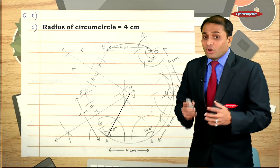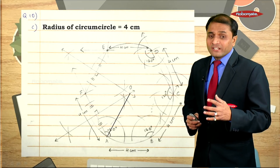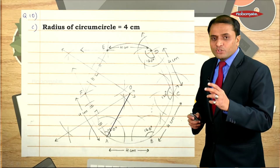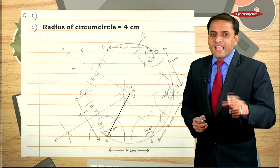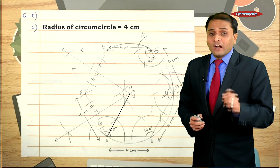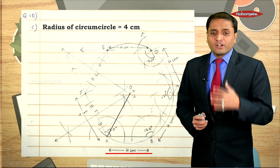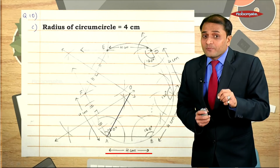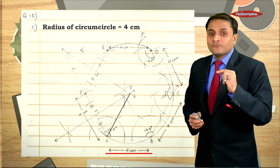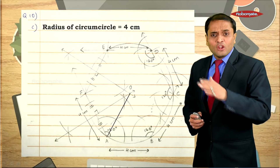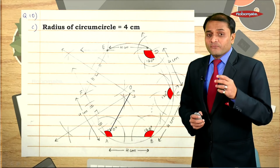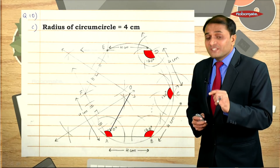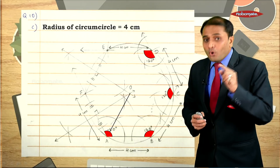Finally, this is the presentation of the construction of a regular hexagon and its circumscribing circle. In construction, whenever you measure and draw any segment or angle, you must show the measurement alongside it. Here, each side of the hexagon is 4 centimeters, so you label each segment with '4 cm.' Each angle of a regular hexagon measures 120 degrees, so you have to label 120 degrees on the four angles that you construct.